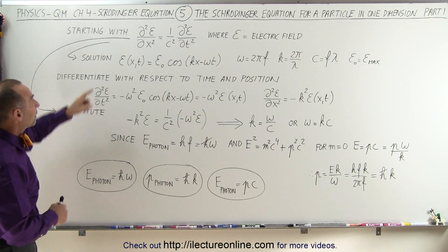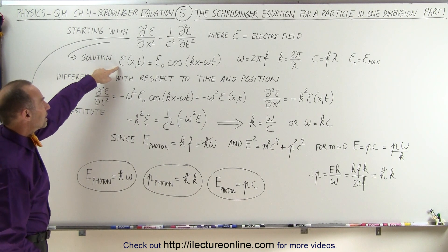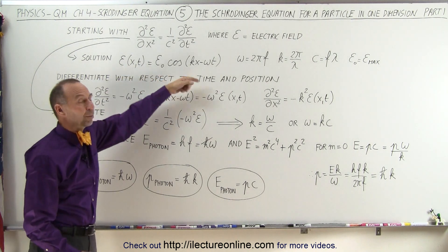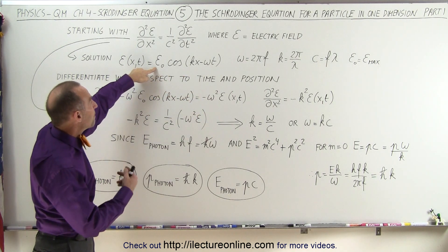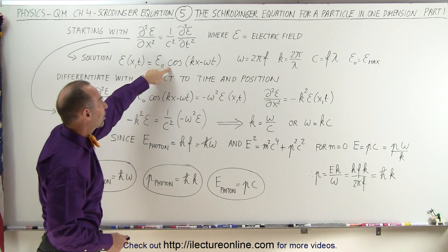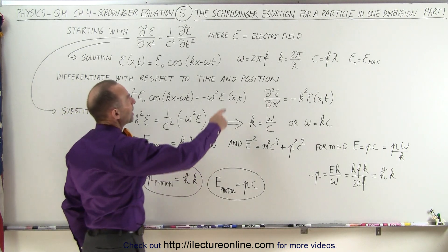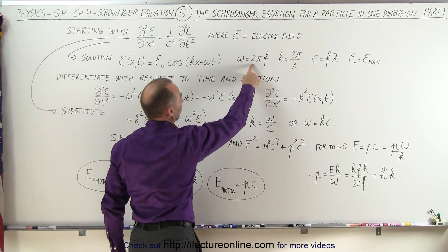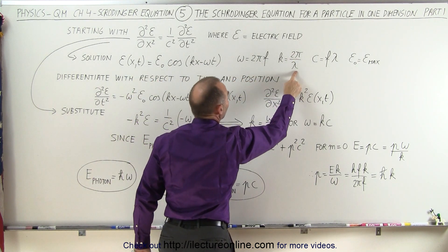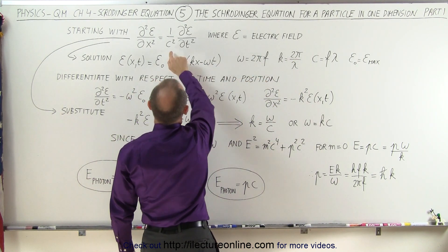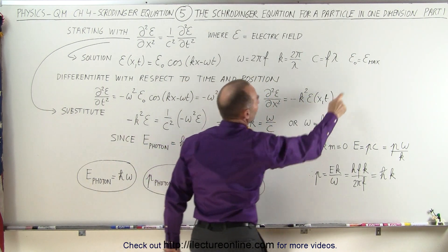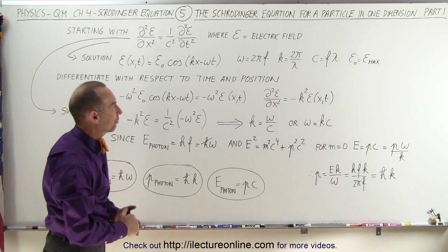The solution of that equation is assumed to be this: the electric field as a function of position and time can be written as a simple wave — the maximum electric field displacement times the cosine of kx minus ωt. Notice that ω is the angular frequency 2πf, k is the wave number 2π over λ, c is the speed of light equal to frequency times wavelength, and E₀ is the maximum displacement of the electric field.